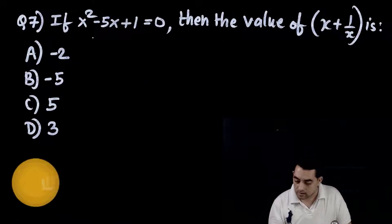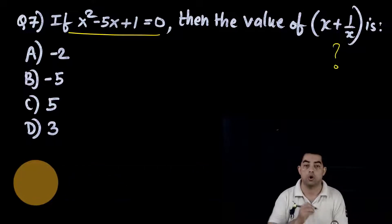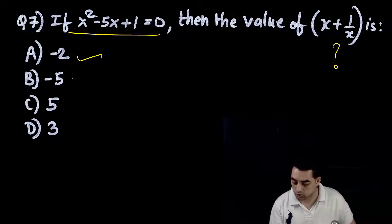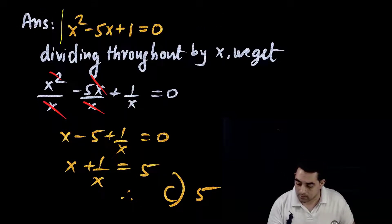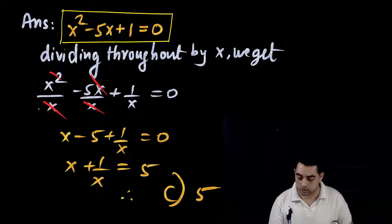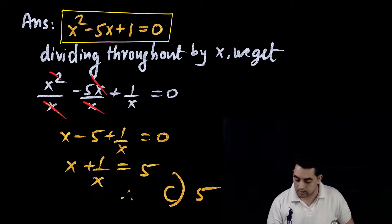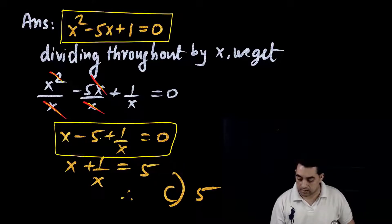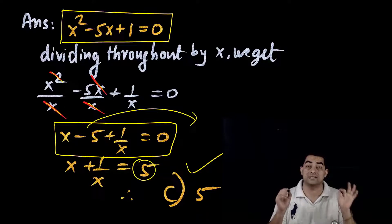Question number 7: if x² - 5x + 1 = 0, find the value of x + 1/x. Options: -2, -5, 5, 3. Divide the entire equation by x: x - 5 + 1/x = 0. Moving -5 to the other side: x + 1/x = 5. The correct answer is option C: 5.